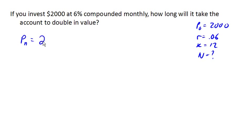So I know my initial amount is 2,000. R over k to the k times T...n.